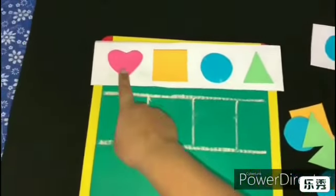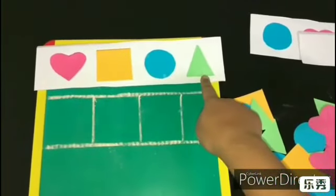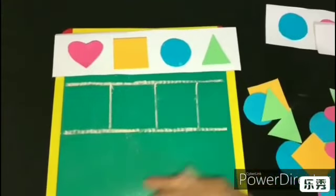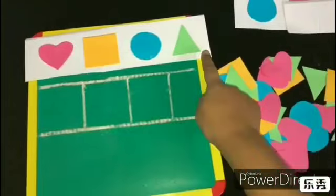Here is heart shape, square shape, circle shape and triangle. Now we are going to place the shapes according to the given pattern.